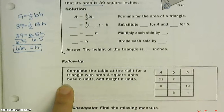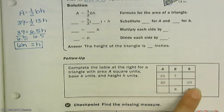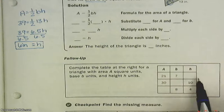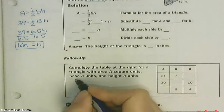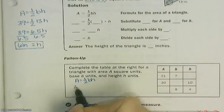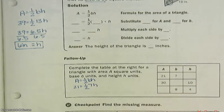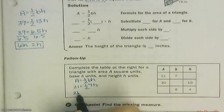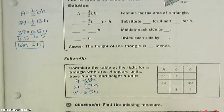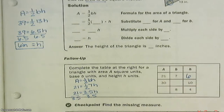Complete the table for a triangle with area A. Here's the area, the base, and the height. We always use our formula: area equals one-half the base times the height. For the first one, area is twenty-one and base is seven. Half of seven is three-and-a-half, so twenty-one equals three-point-five H. Divide both sides by three-point-five. Twenty-one divided by three-point-five is six. The height is six.